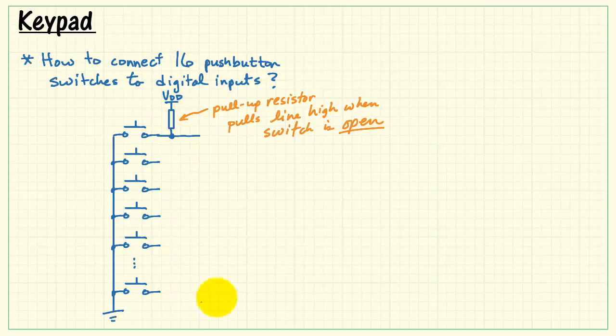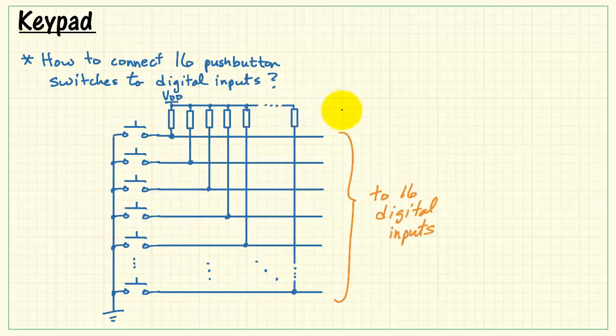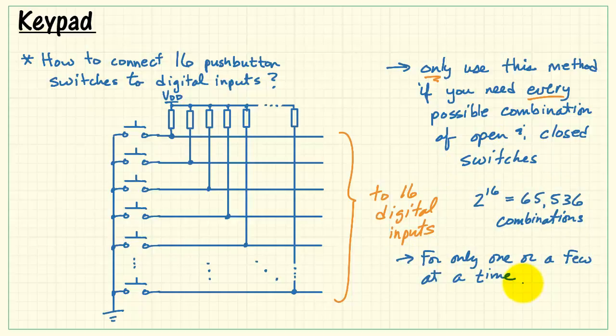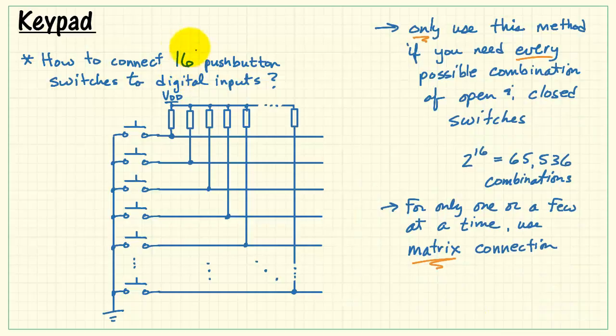Now we would need to have a pull-up resistor for each of the remaining switches. We'd have an arrangement like this, and this is what we send to the digital inputs. We require 16 inputs. Now we would only use this method if you need every possible combination of open and closed switches, and that's a little bit more than 65,000 possible combinations. If you only have one or a few key presses at a time, then the matrix connection is superior. Let's see why.